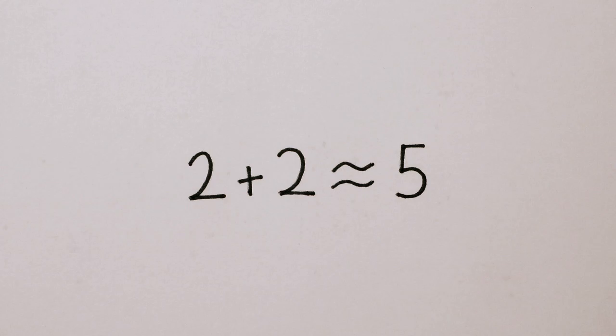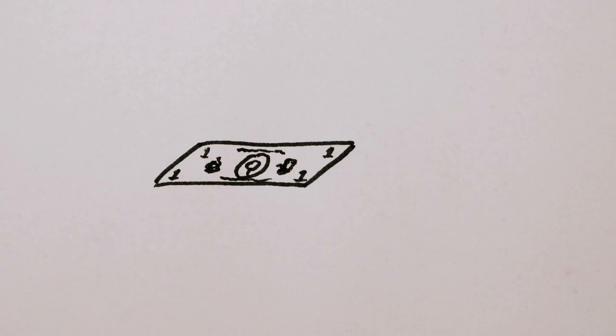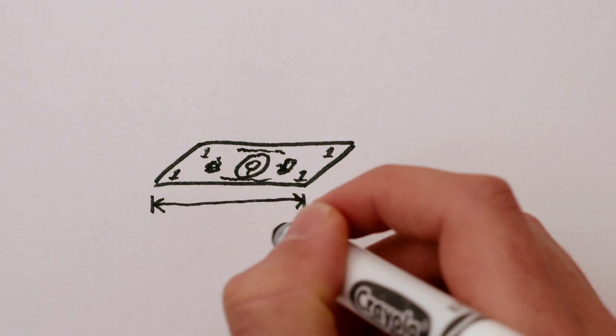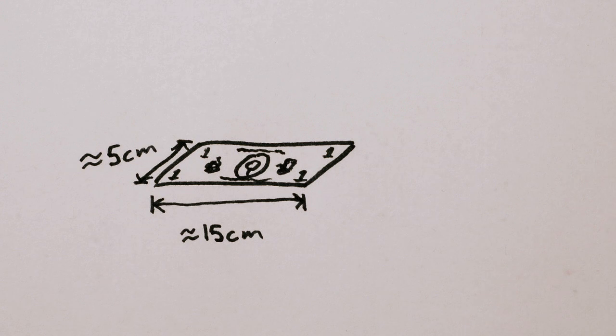We approximate. We don't know how much a dollar weighs, but we do know how big it is, more or less. A dollar is about 15 centimeters long and 5 centimeters wide.